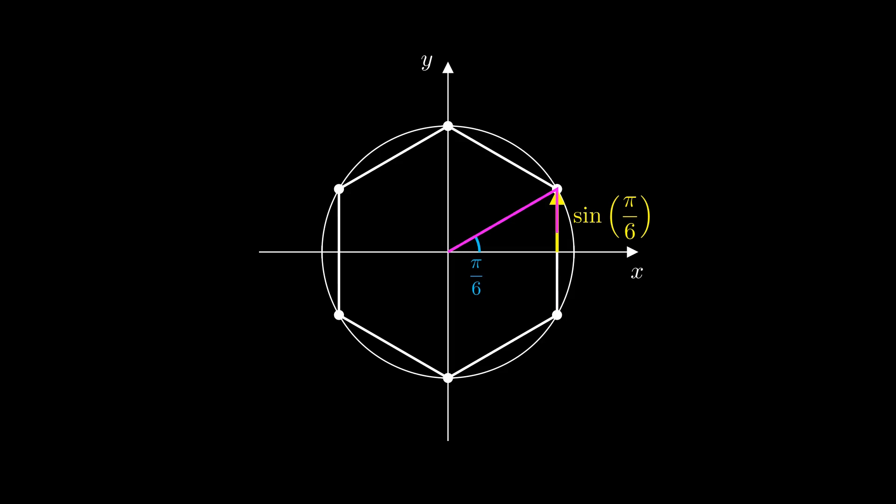We can find the length by focusing on this triangle. All the angles are π/3 or 60 degrees, so it's equilateral. This side length is 1, so the sine of π/6, which is half of one of the side lengths, must be equal to 1/2.